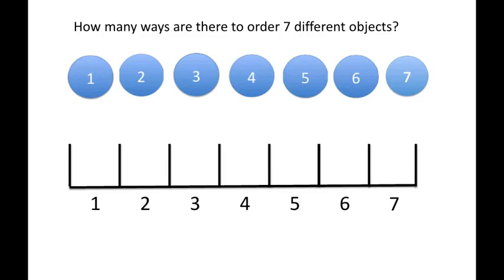How many ways are there to order 7 circles? We have these 7 blue circles, and we want to put them into 7 of these bins. How are we going to calculate that?